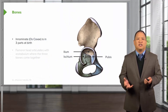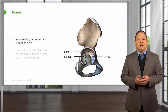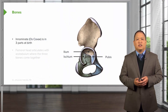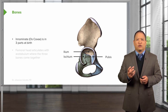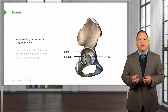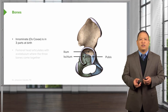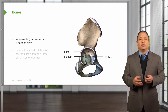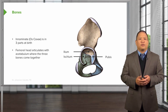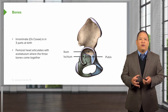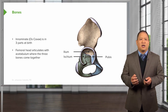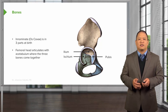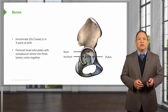So let's take a closer look at the pelvis. The pelvis itself is also called the innominate. It consists of three separate bones at birth: the ilium, which is more superior; the ischium, which is a little bit more posterior and inferior; and the pubic bone, which is anterior. The three bones come together and form the acetabulum, the socket where the femoral head articulates with the innominate.